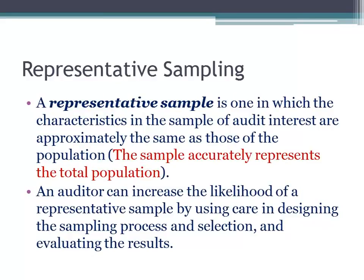It's important to ensure that your sample represents characteristics of the population. If you're trying to test internal controls over cash disbursements, you're not going to start with purchase orders. Purchase orders are the initiation point that eventually leads to cash disbursement. There are characteristics in testing cash disbursements where you'd want to see the purchase order — that's an attribute of controls over cash disbursements — but you're not going to start with purchase orders to test cash disbursements.